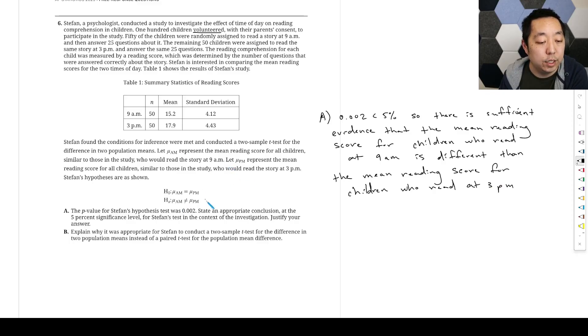Okay, they're basically saying we're just saying that this is true. I'm trying to see if there's a trick. It seems kind of straightforward, just making sure you know how to state that. Explain why it was appropriate for Stefan to conduct a two-sample t-test for the difference in the two population means instead of a paired t-test for the population mean difference.